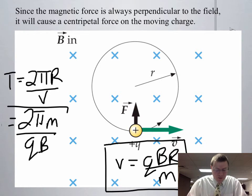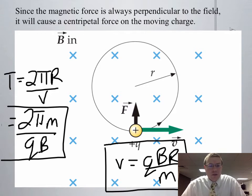When you do that, you get the time for something to orbit in a magnetic field is equal to 2πm over q times the magnetic field strength, which means it's independent of your speed. It doesn't matter how fast you're going.